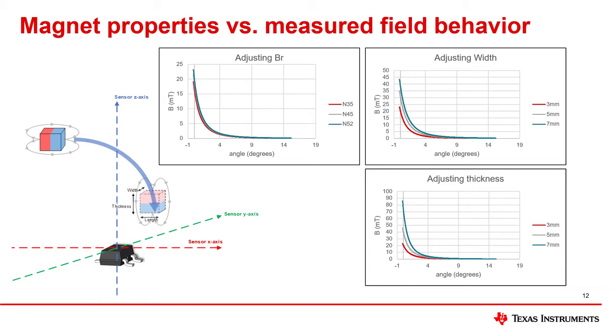we can see how the B-field curve changes with different remanence values. N35, N45, and N52 are different grades of neodymium magnets with increasing remanence levels. N35 has a 1.2 Tesla remanence, while N52 has 1.46 Tesla remanence. Here, you can see that the magnetic flux does increase with increasing remanence. However, the change is relatively small.